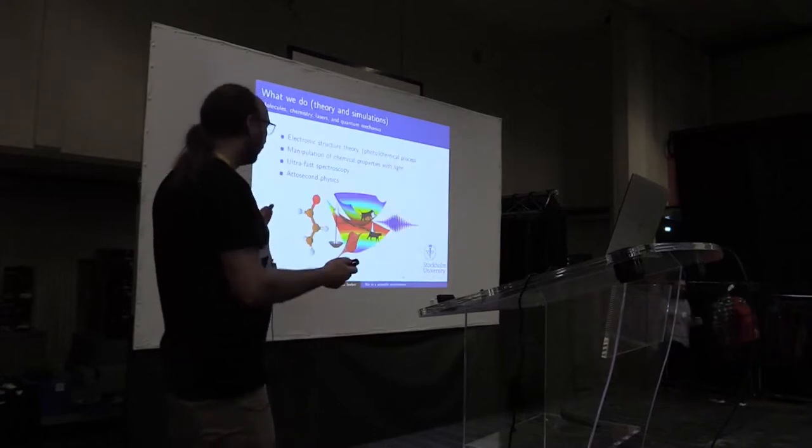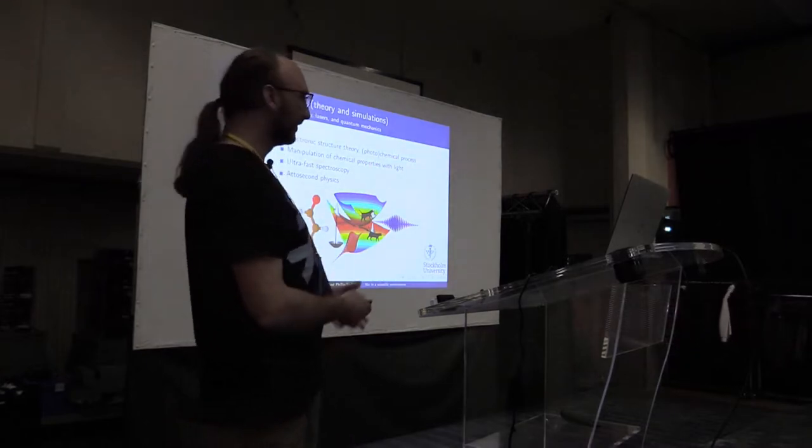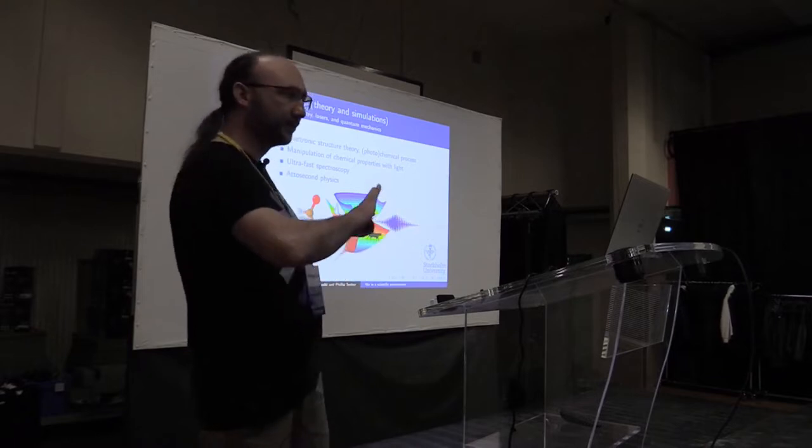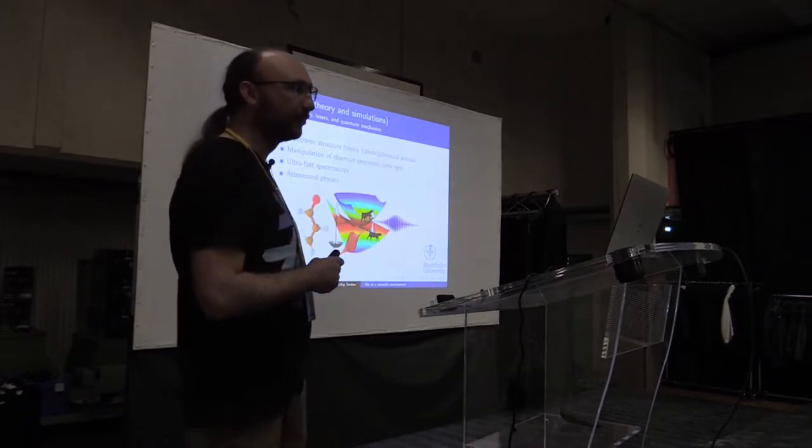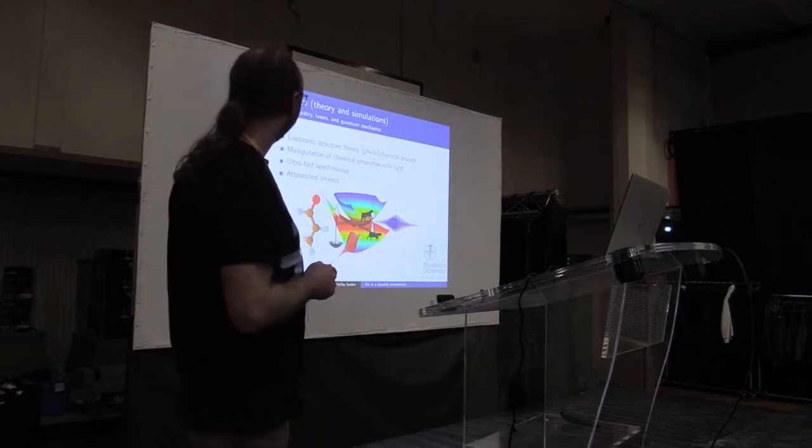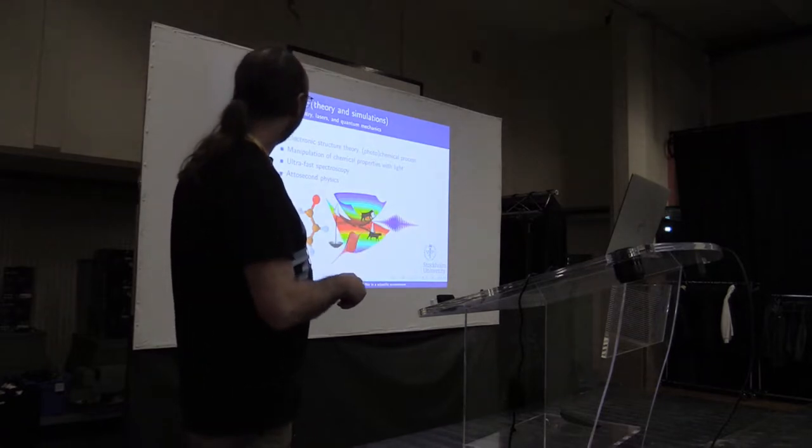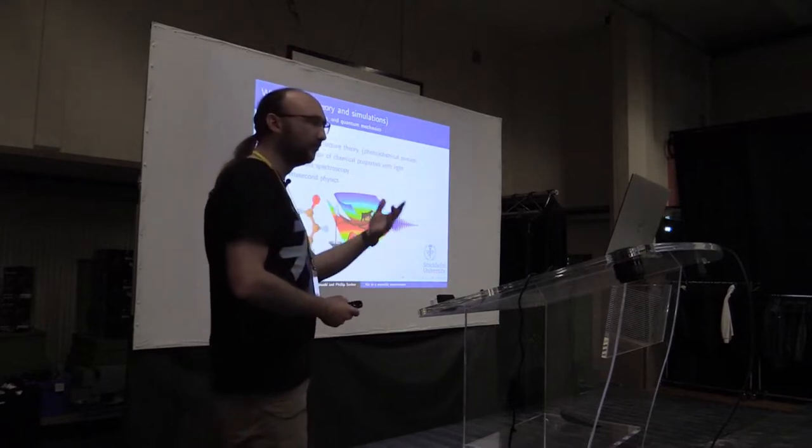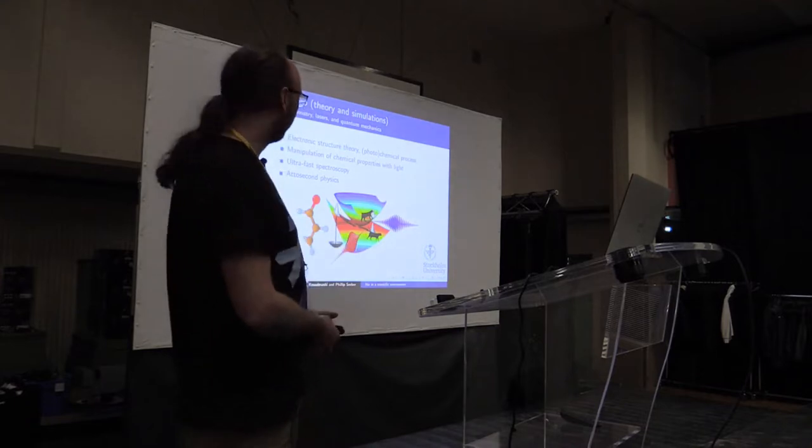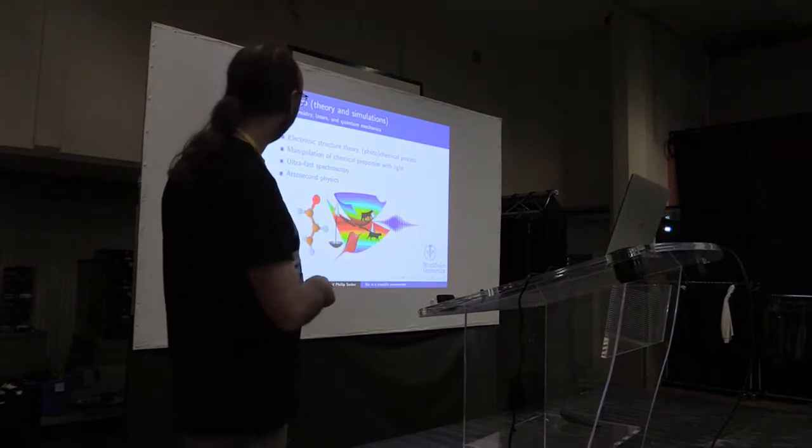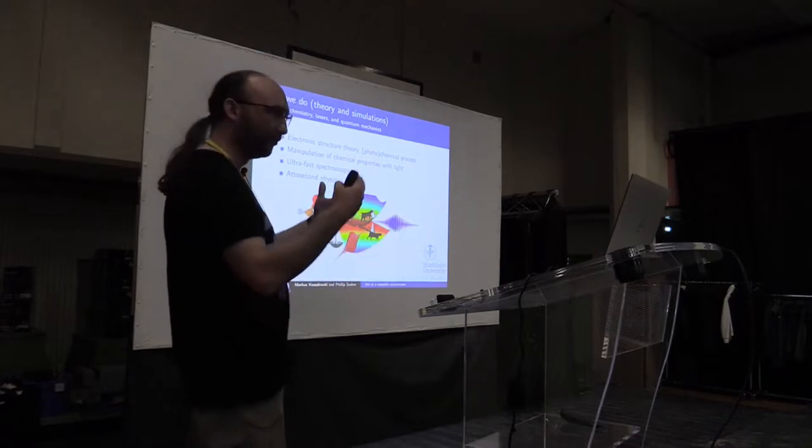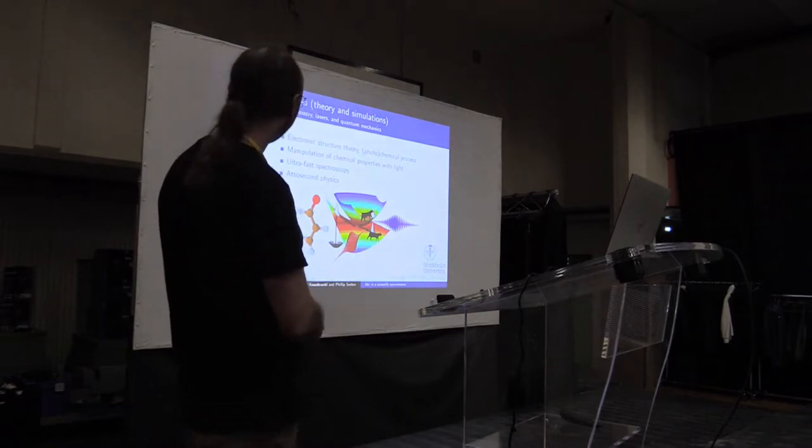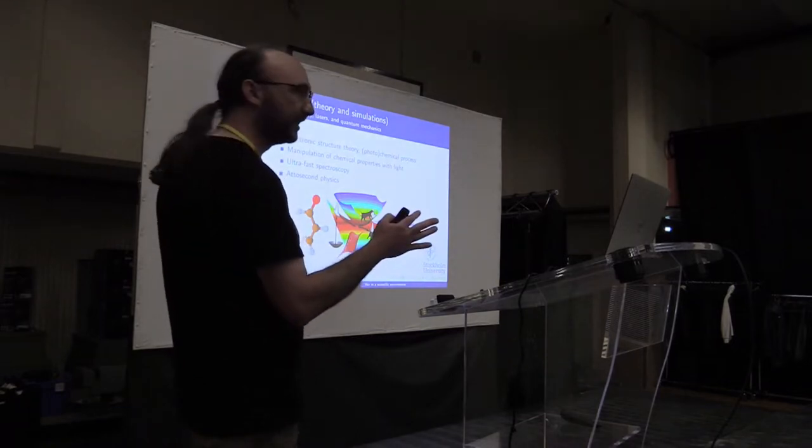What we do in everyday life: we're chemical physics, theoretical chemists. We mostly do theory and simulation, no experiments, but we keep computers busy all day long at a large rate. What I'm particularly doing is electronic structure theory, photochemical processes. For example, what happens if you get a sunburn? The chemical process behind those things. We look at manipulation of chemical properties with light fields, ultra-fast spectroscopy and attosecond physics.